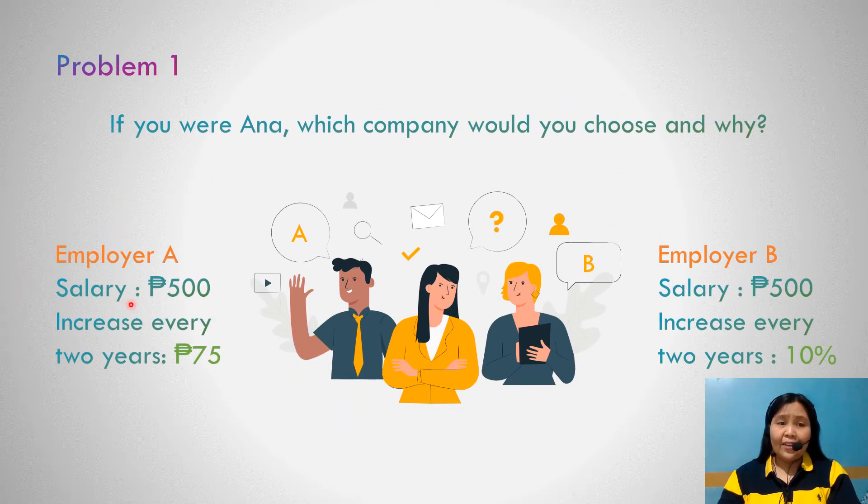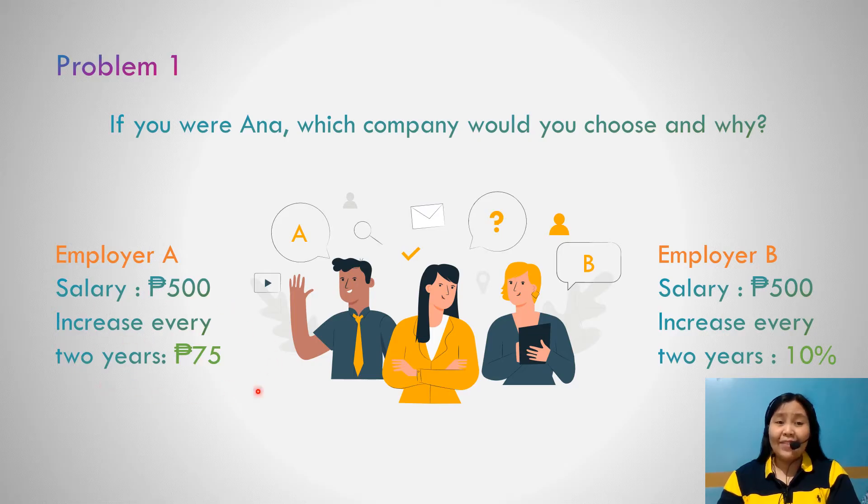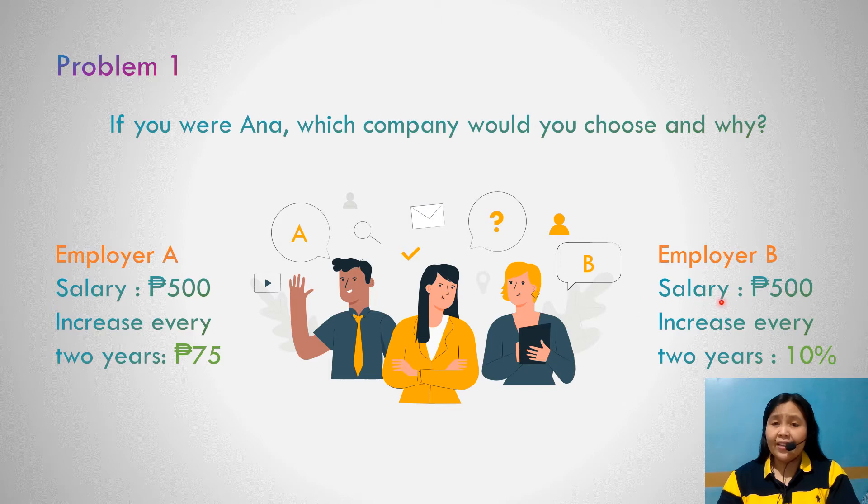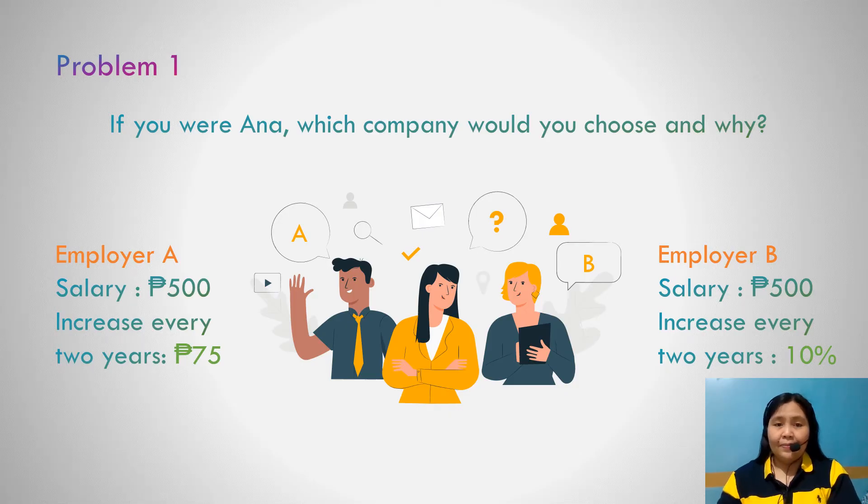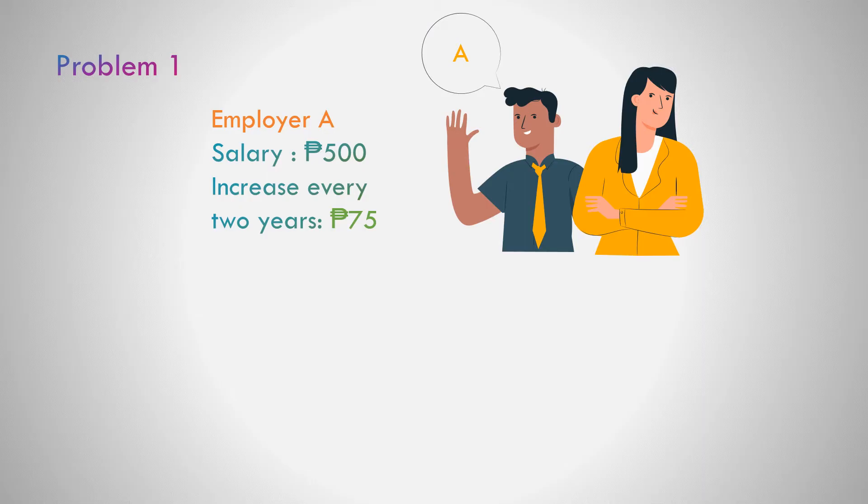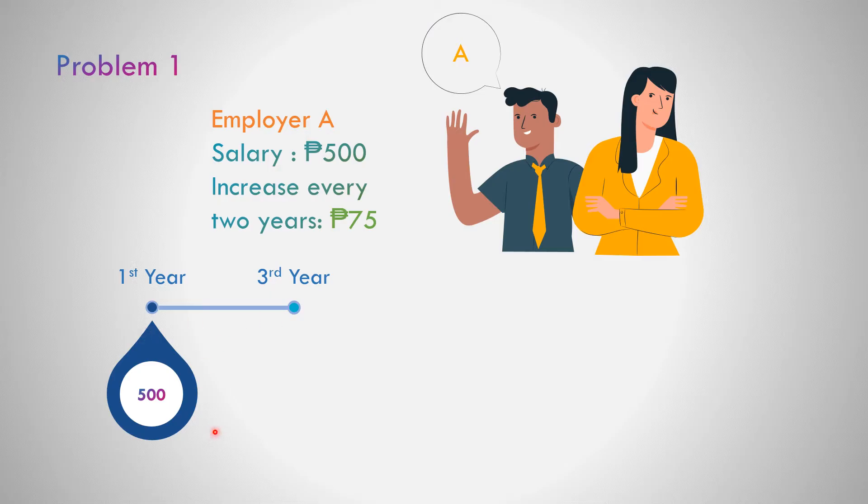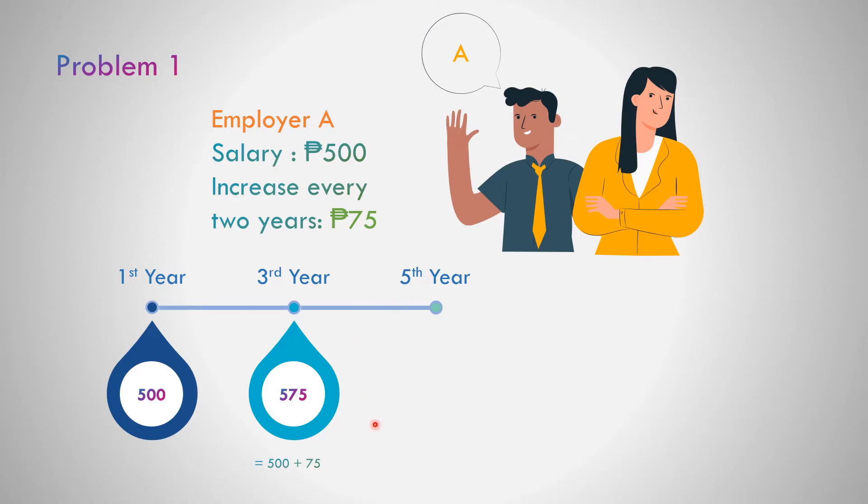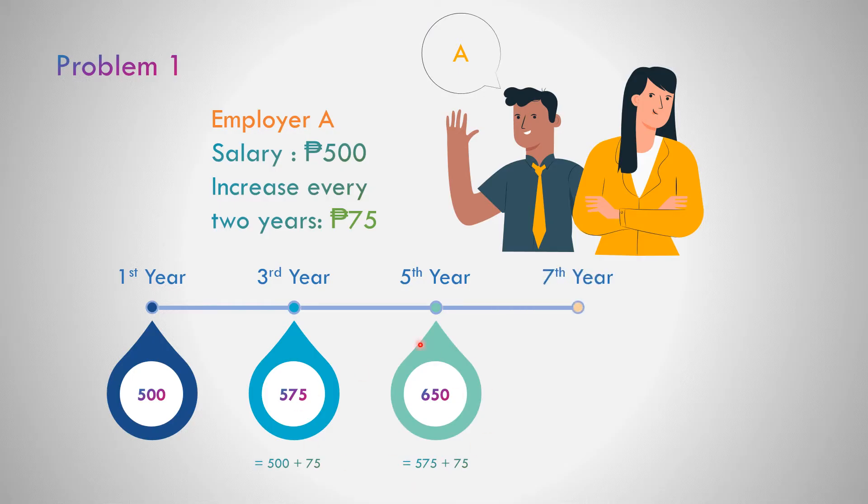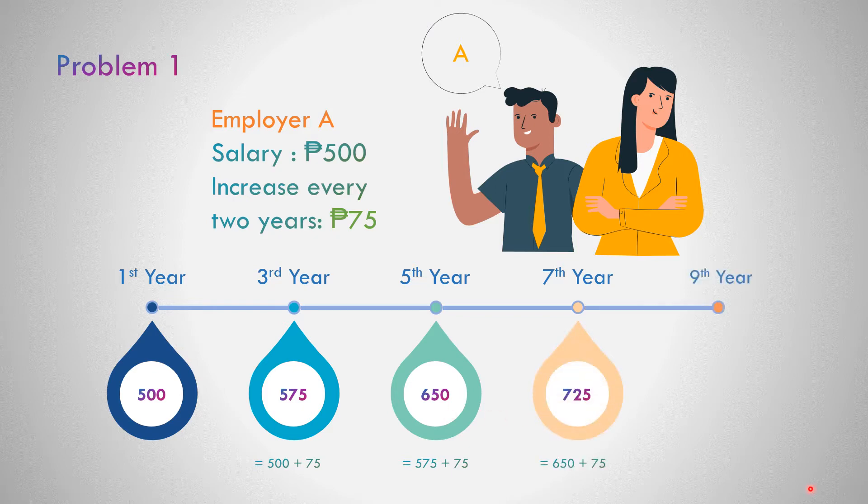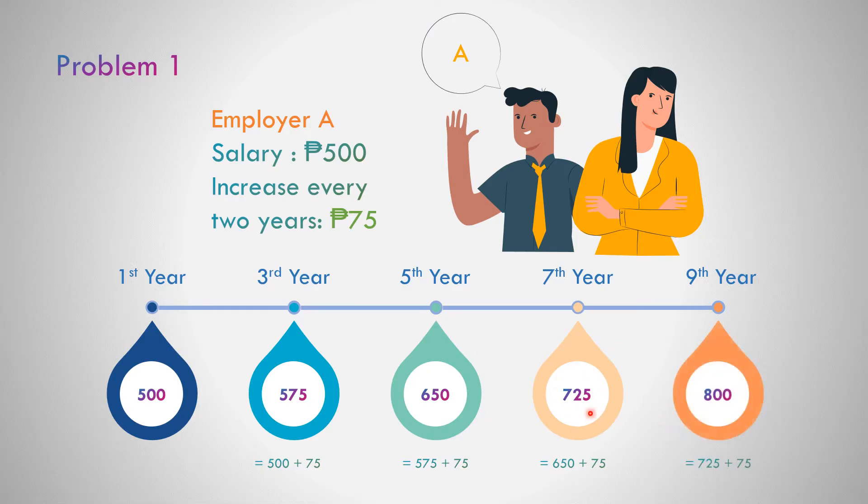Employer A offers an initial salary of 500 pesos, increase every two years is 75 pesos. As you can see, the initial salary is 500 pesos. After two years, additional 75, that is 500 plus 75 equals 575. After two years, that is another 75 pesos, so 575 plus 75 is 650. Then 650 plus 75 equals 725, and 725 plus 75 in the ninth year becomes 800 pesos.